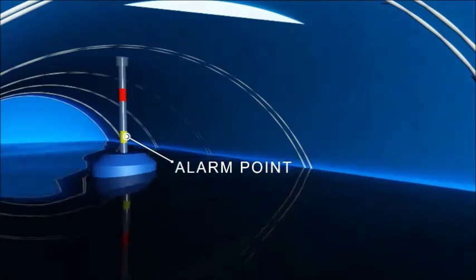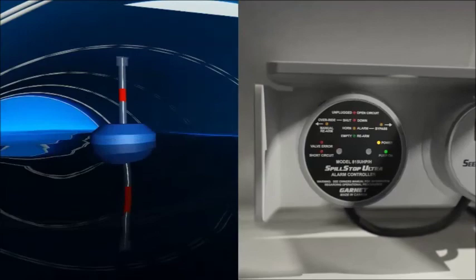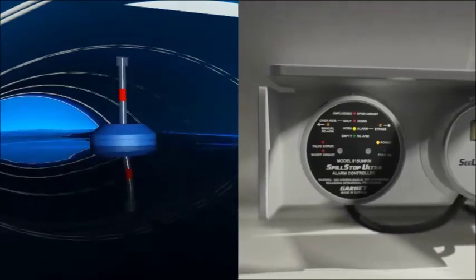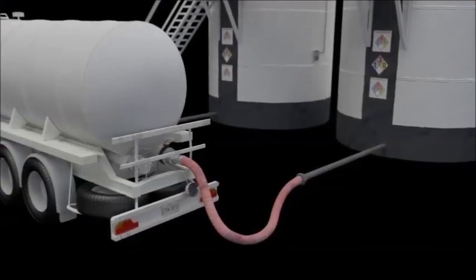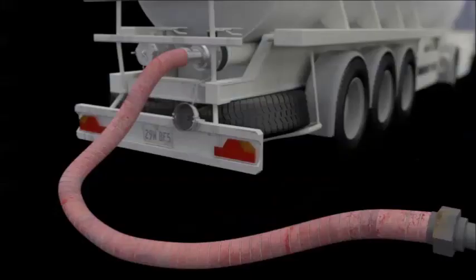The gauge has a programmable alarm point that, when reached by the float, will activate the orange horn alarm indicator on the display, sound an alarm to notify the operator that the tank is full, and shut down the pump.